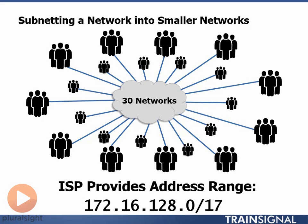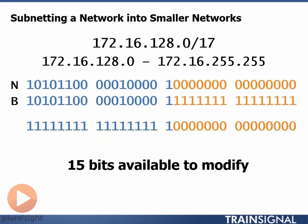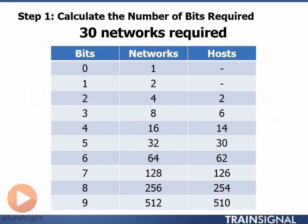Our ISP provided us the range of 172.16.128.0/17 and we need to divide that into 30 networks. Our range is 172.16.128.0 through 172.16.255.255. I have 15 bits available to modify. I need 30 networks. Looking at my list, 16 is too few, 32 is too many but will work.